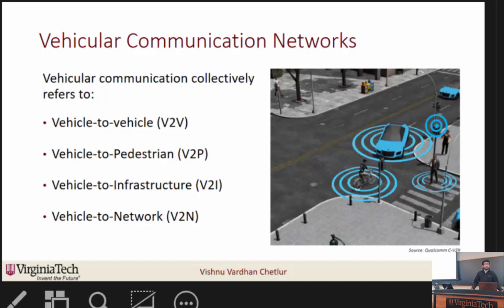Vehicular communication collectively refers to four types of communication. The first type is vehicle-to-vehicle or V2V, in which information is exchanged between vehicles related to collision avoidance and safety mechanisms. The second type is vehicle-to-pedestrian, V2P, which encompasses communication between vehicles and pedestrians with handheld devices such as mobiles and also bicyclers.